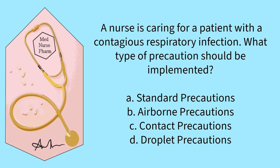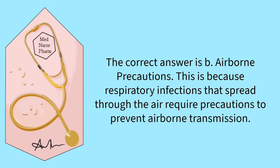A nurse is caring for a patient with a contagious respiratory infection. What type of precautions should be implemented? Standard, airborne, contact, or droplet? The correct answer is B, airborne precautions. This is because respiratory infections that spread through the air require precautions to prevent airborne transmission.